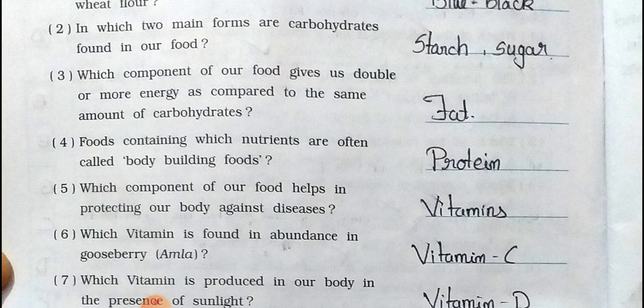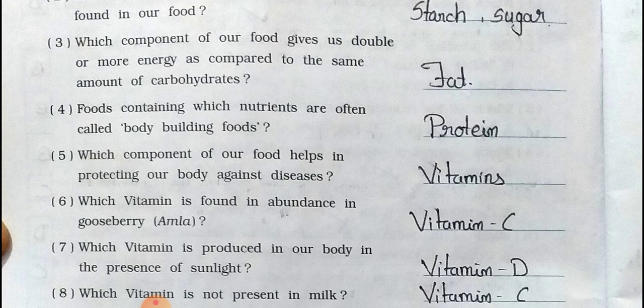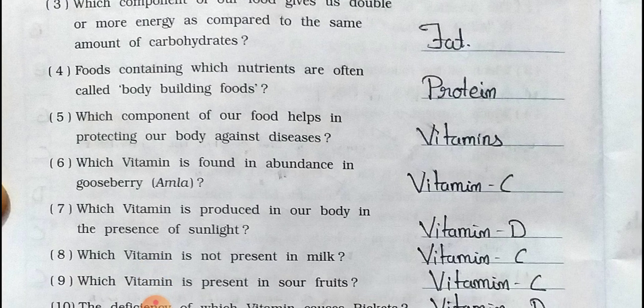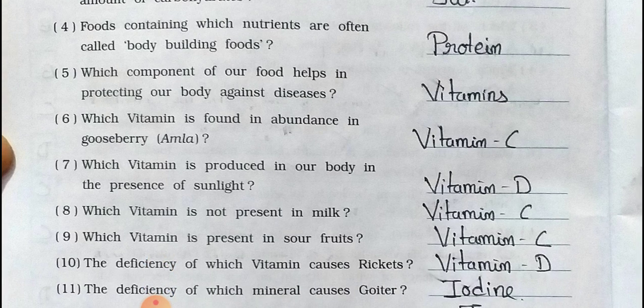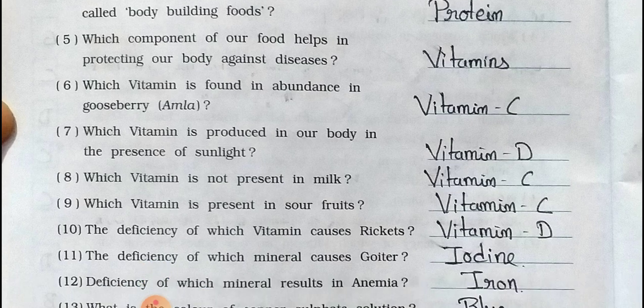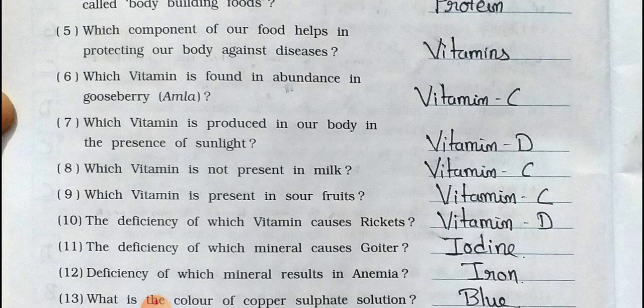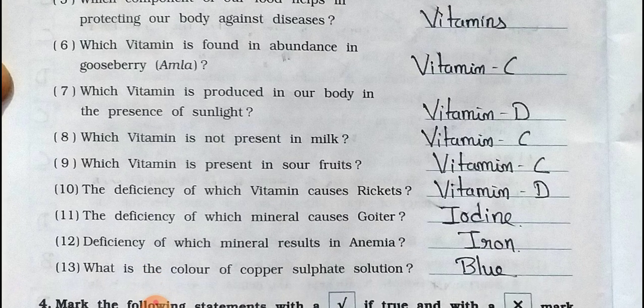Question three: which component of our food gives us double or more energy as compared to the same amount of carbohydrates? Answer: Fat. Question four: foods containing which nutrient are often called body-building foods? Answer: Protein. Question five: which component of our food helps in protecting our body against disease? Answer: Vitamins.